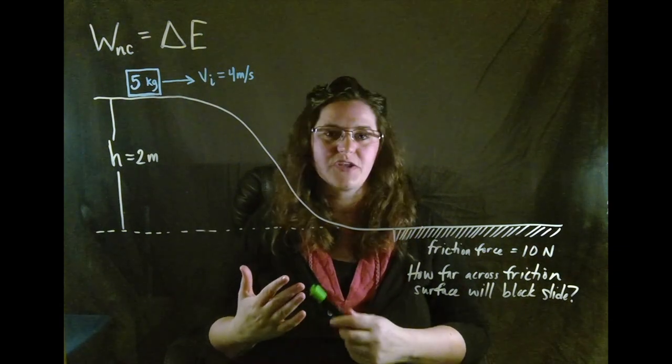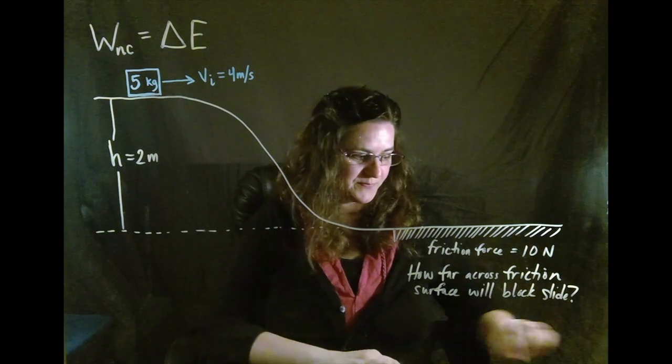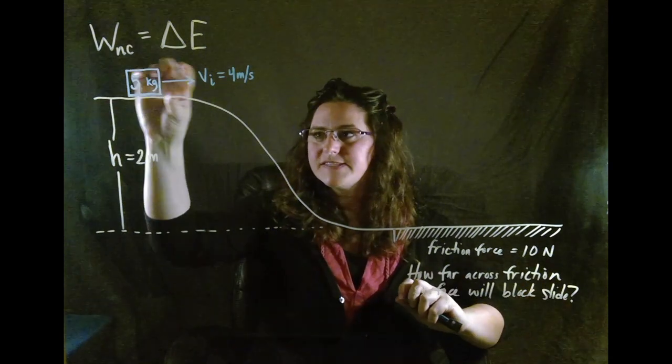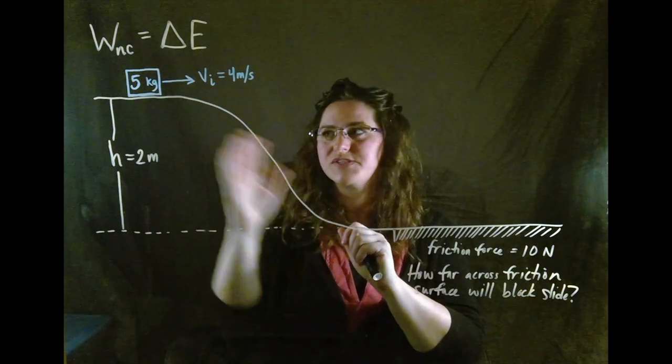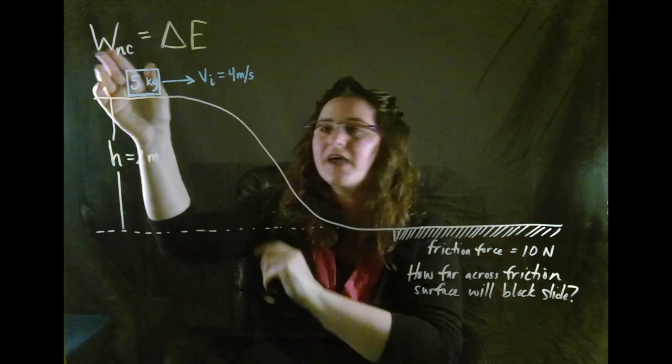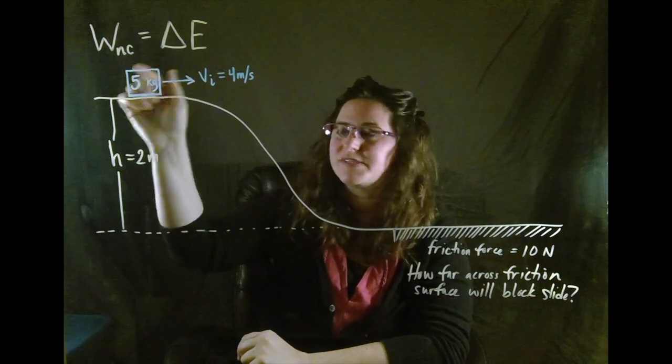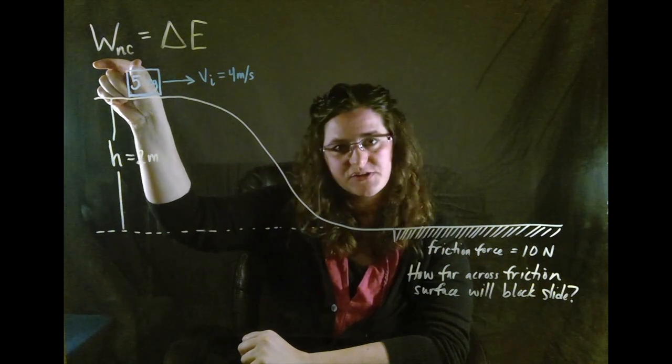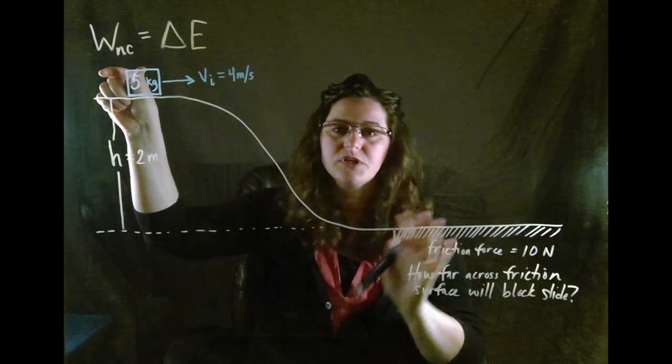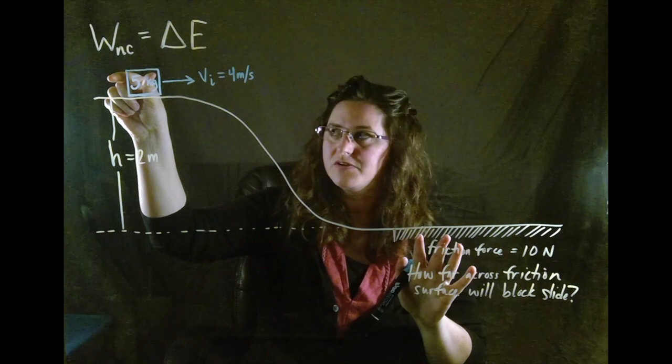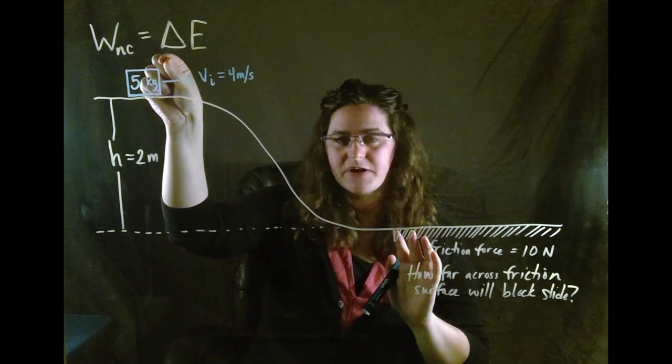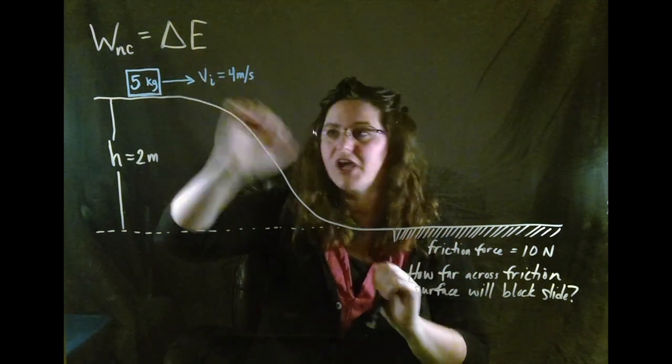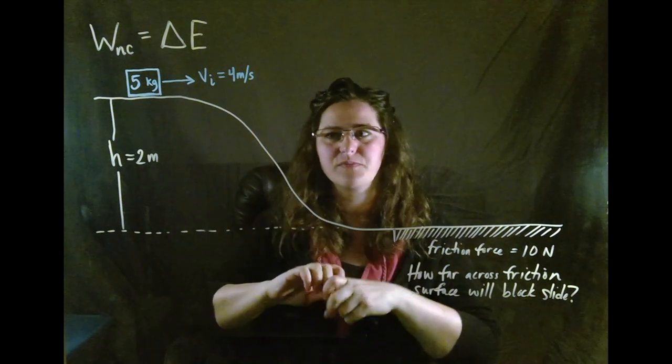So let's draw the final position of our block here. Our block slides down the slope and the really cool thing about these problems is you don't have to care about anything else besides the three elements that I just told you about. Work done by the non-conservative forces and the only non-conservative force here is friction and the final energy minus the initial energy and we don't care what happens to the block in between.